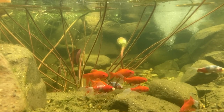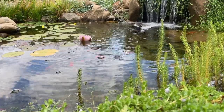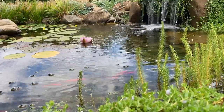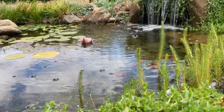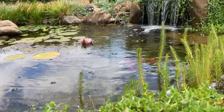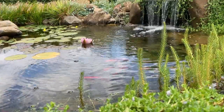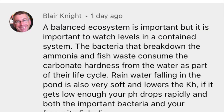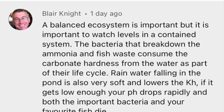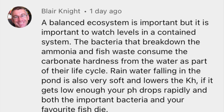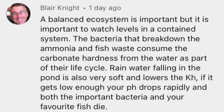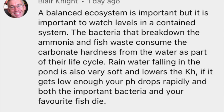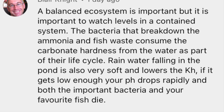So just how important are these readings for your pond? I recently made a video about how I hardly ever feed my pond fish. On that video I received an interesting comment from a viewer. This is what Blair had to say: 'A balanced ecosystem is important, but it is important to watch levels in a contained system. The bacteria that break down the ammonia and fish waste consume the carbonate hardness from the water as part of their life cycle. Rainwater falling in the pond is also very soft and lowers the KH. If it gets low enough, your PH drops rapidly and both the important bacteria and your favourite fish die.'